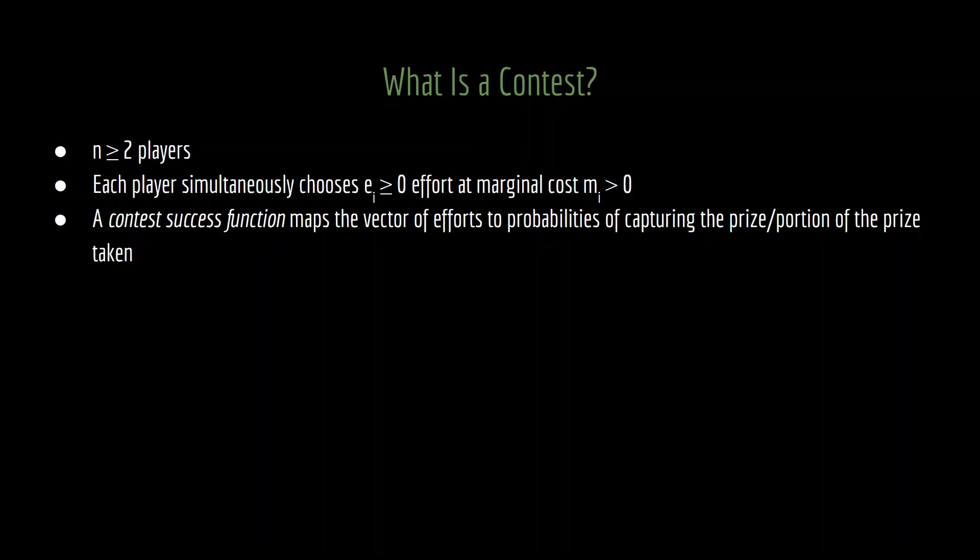In other words, if you tell me each of the effort levels that the players have chosen, the contest success function will then tell each of those players how much they expect to receive. And for the type of risk-neutral actor that we're going to be studying here, it is identical to think about whatever the function is going to spit out as the probability of winning the entire thing, or what portion that you're expecting to take on average.